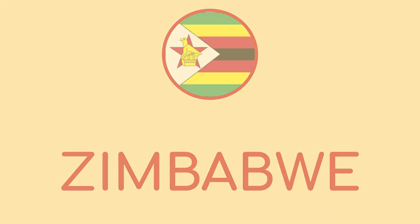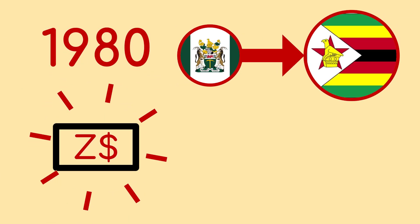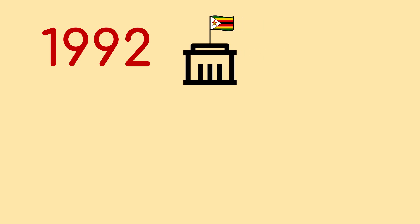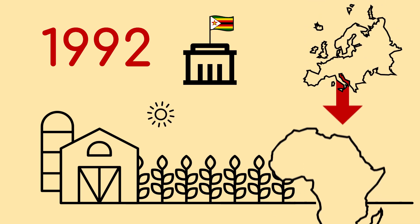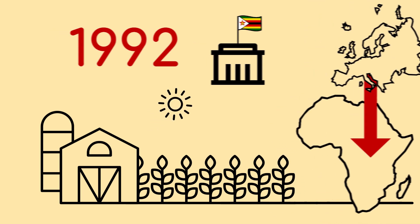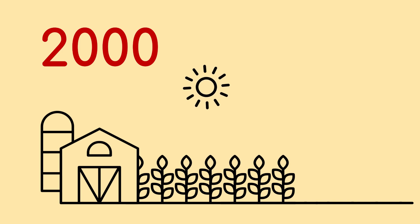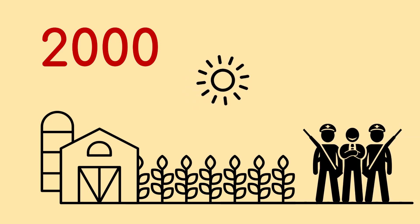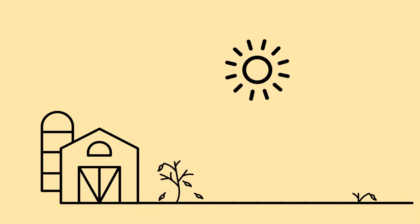Zimbabwe. After gaining independence in 1980, a new currency was created — the Zimbabwe dollar — which was fixed to the US dollar. In 1992, a new law was created that empowered the government to acquire any land it saw fit after payment of financial compensation. This law aimed to redistribute land and farms from people of European ancestry to native Africans. The program was subject to mismanagement and corruption, and this escalated over time until, in 2000, land was forcibly and often violently seized from white farmers. This meant that what had been agricultural land was poorly managed or simply no longer used for farming at all.